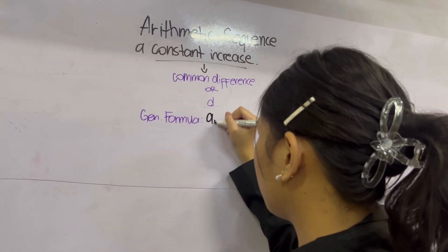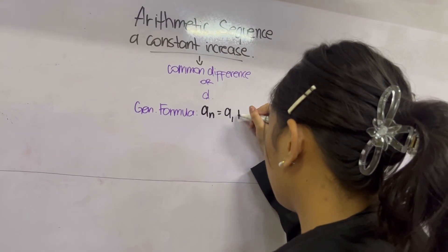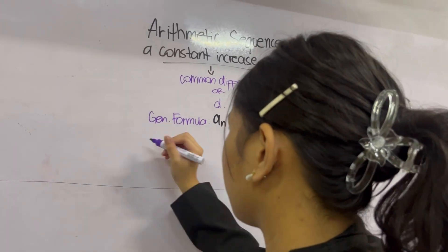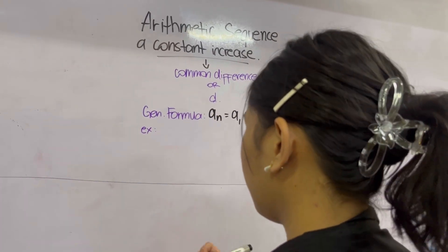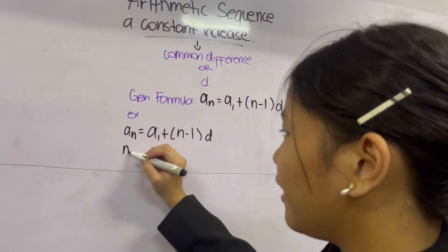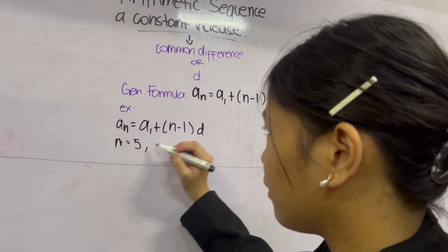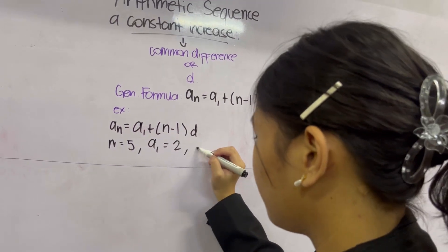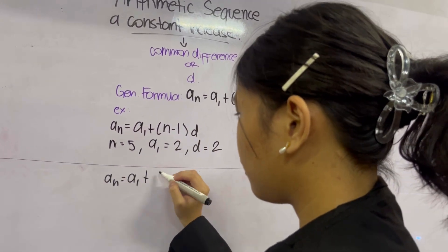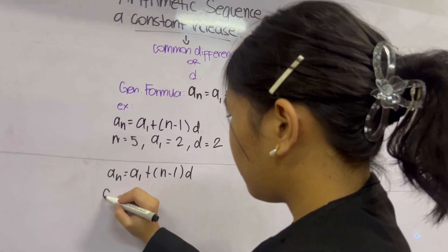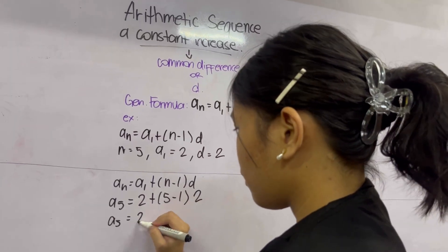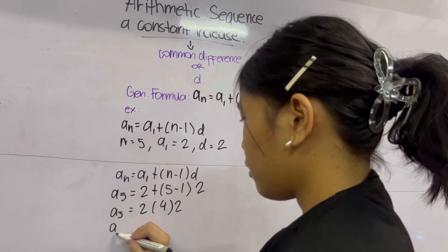Here's an example. We use the general formula with the following values: n is equal to 5, A sub 1 is equal to 2, and D is equal to 2 as well. We replace all the variables with the given values. So, A sub 5 is equal to 2 plus (5 minus 1) times 2, which gives 2 plus 4 times 2, which is 2 plus 8, equal to 10. So, A sub 5 is equal to 10.